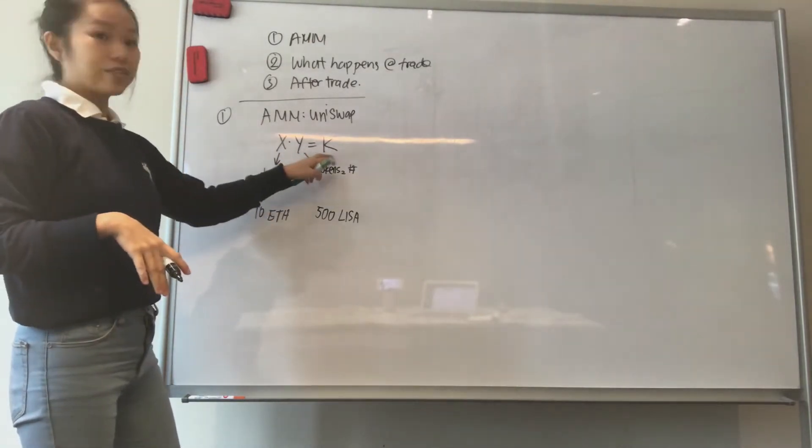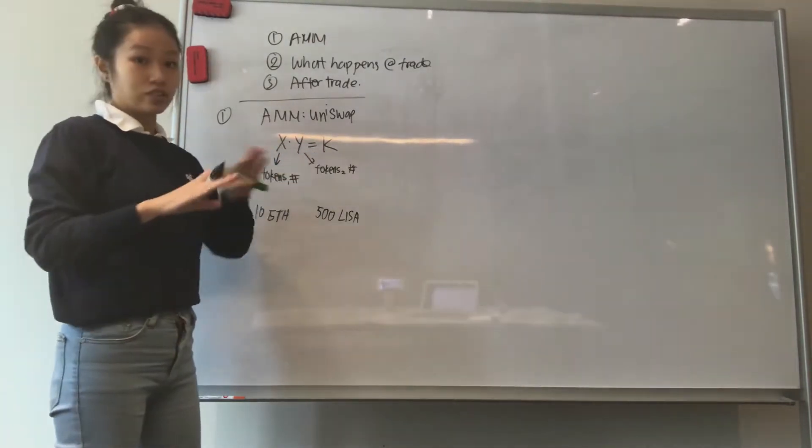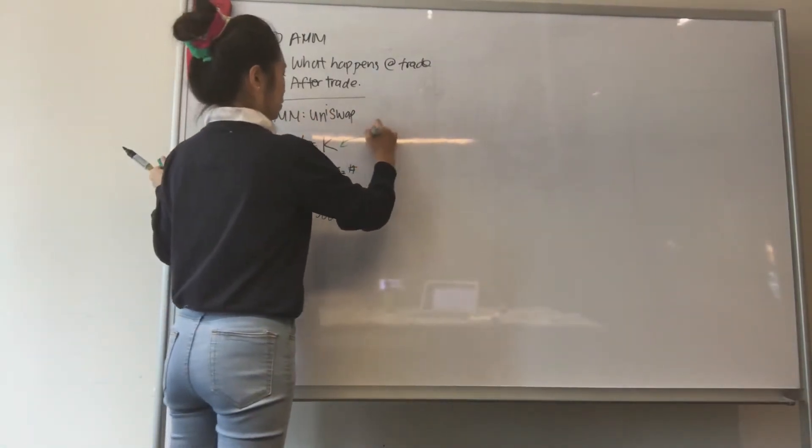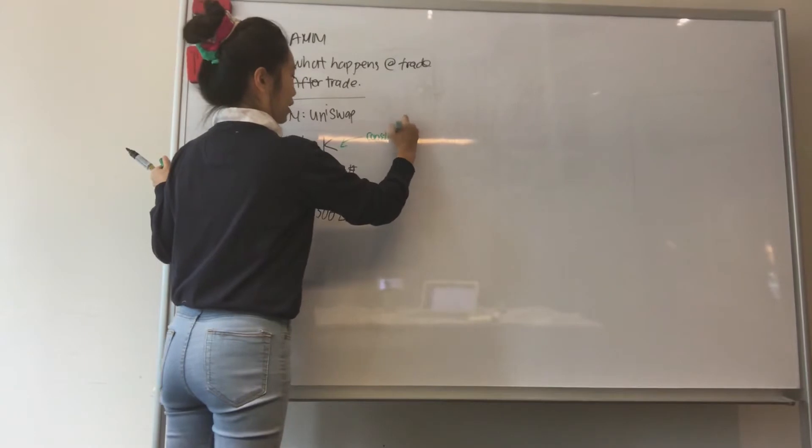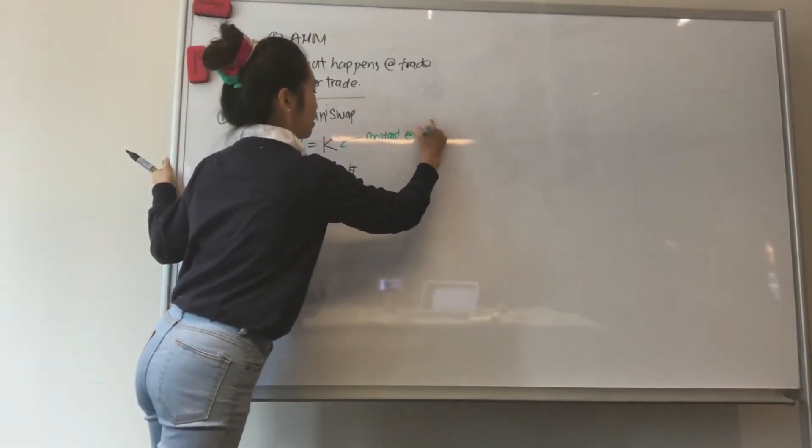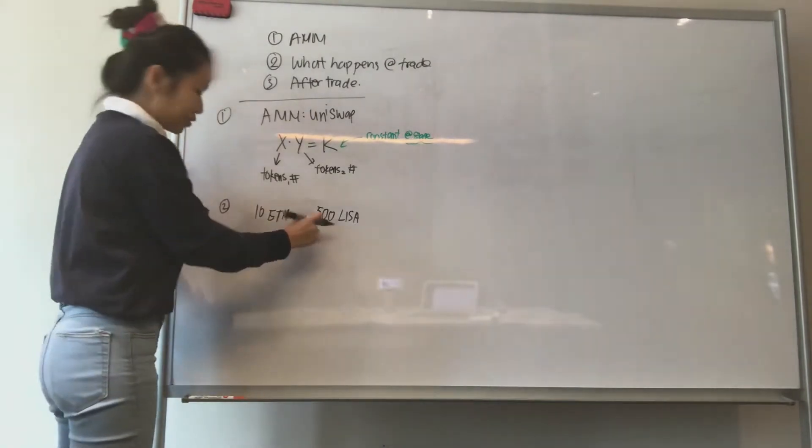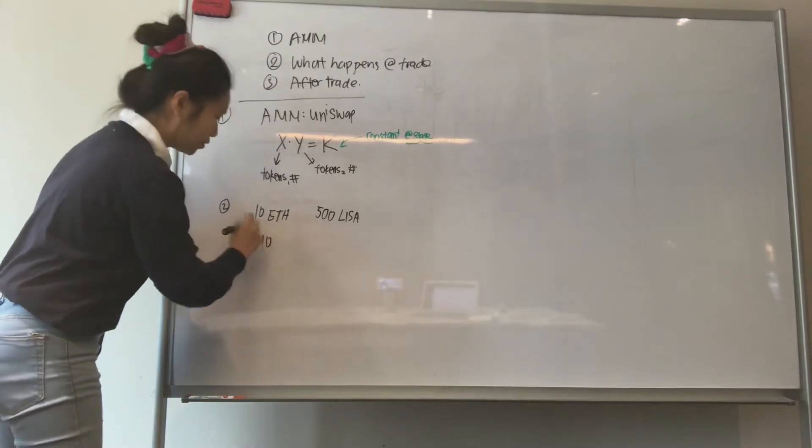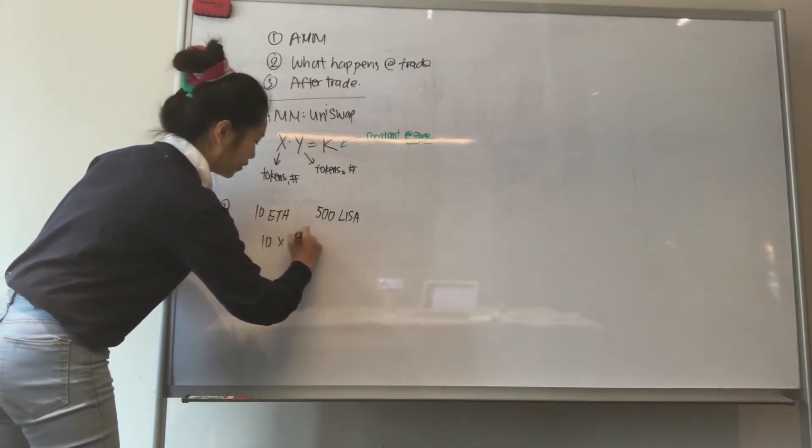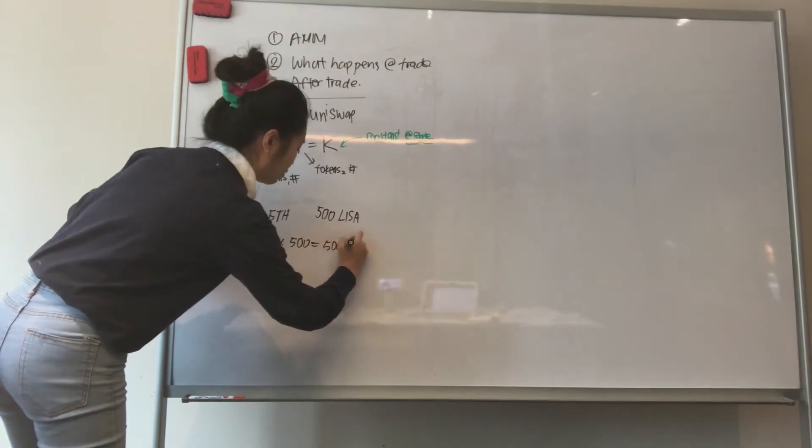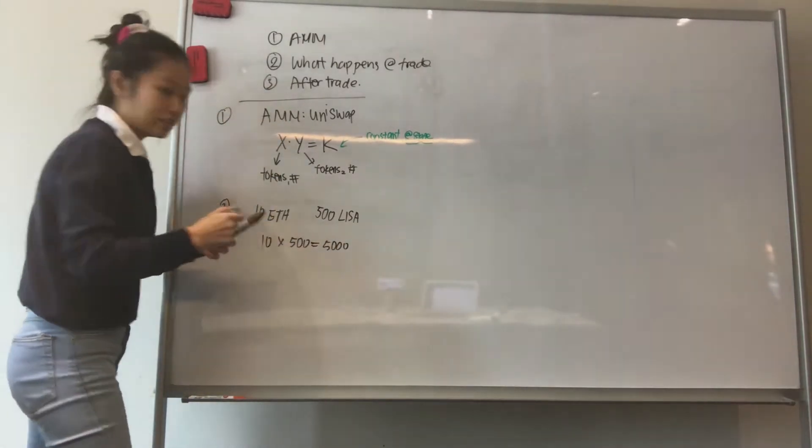What is this k then? This k is a constant. It doesn't change. And it's a constant at a state. This is the amount that we start with, right? So what is the constant here? It's 10 ETH multiplied by 500 LISA tokens, and that gives us 5,000. And this is the constant.